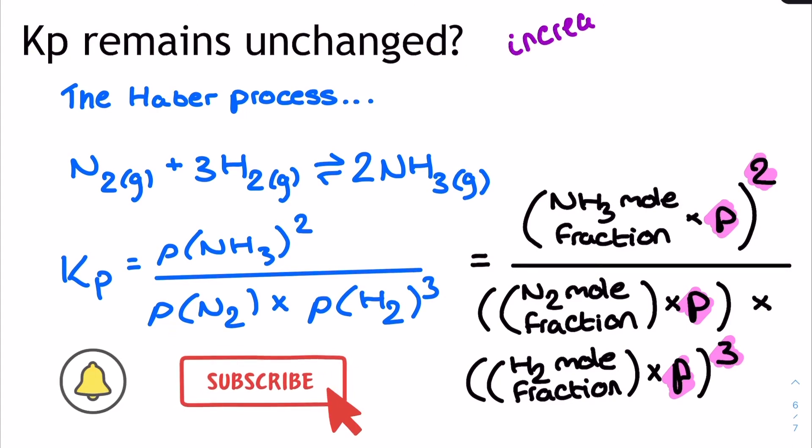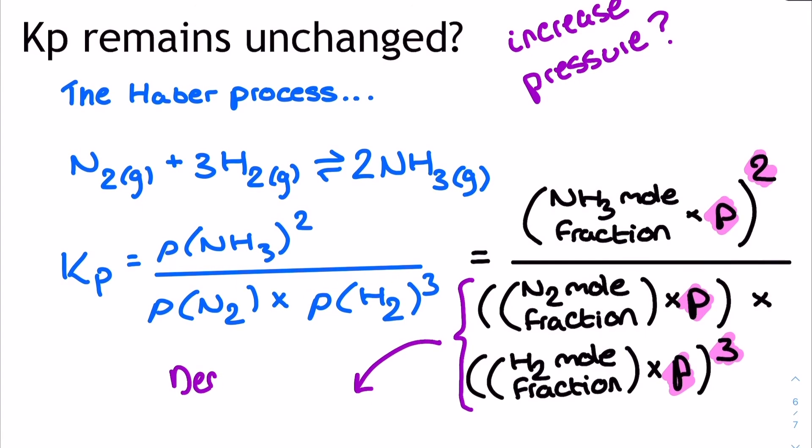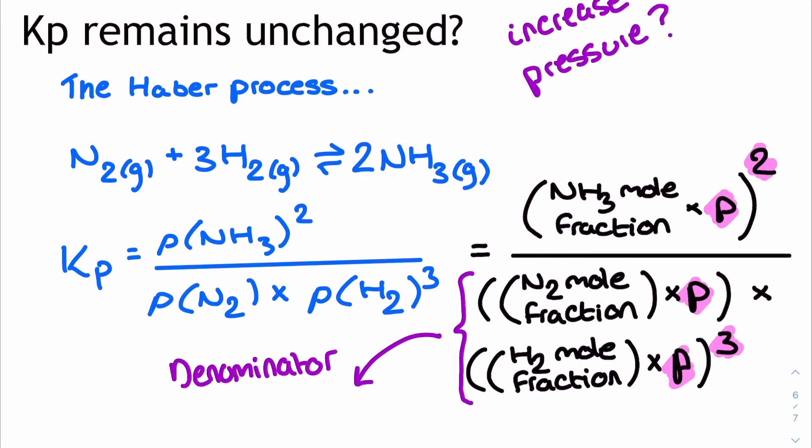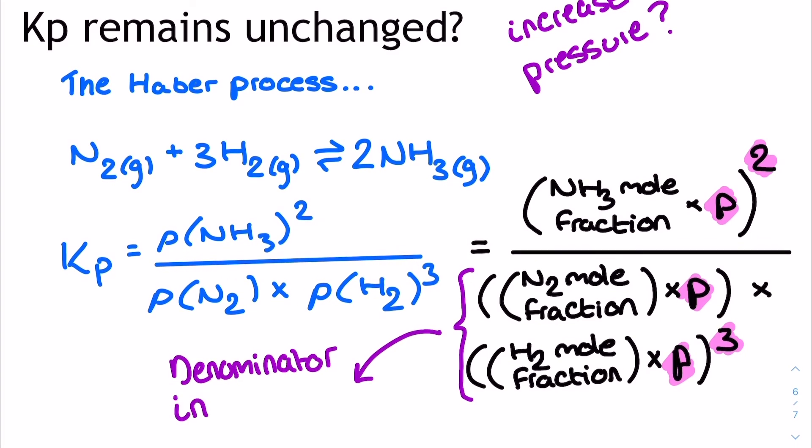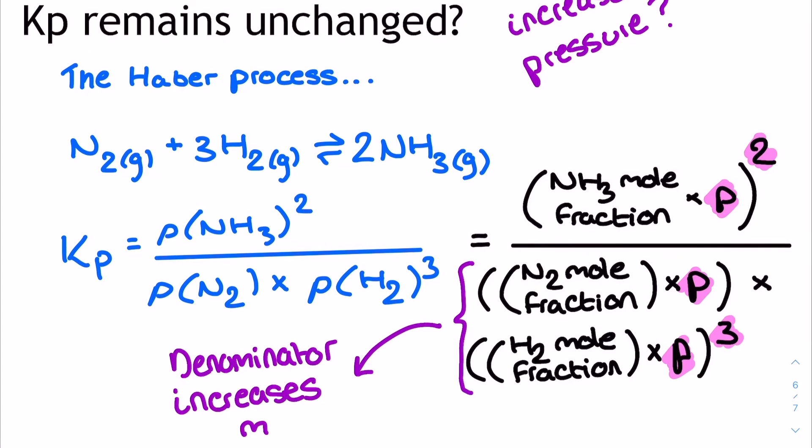In this example of the Haber process, the denominator will actually increase more than the numerator, because there are more terms on the denominator which include pressure. If we examine this closely, we can see on the denominator, we've got the partial pressure of the nitrogen multiplied by the partial pressure of the hydrogen cubed,